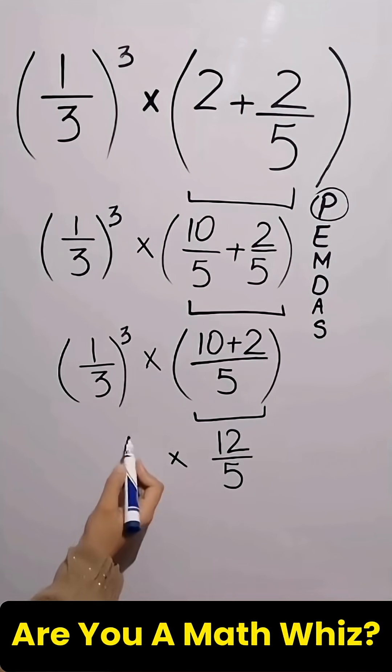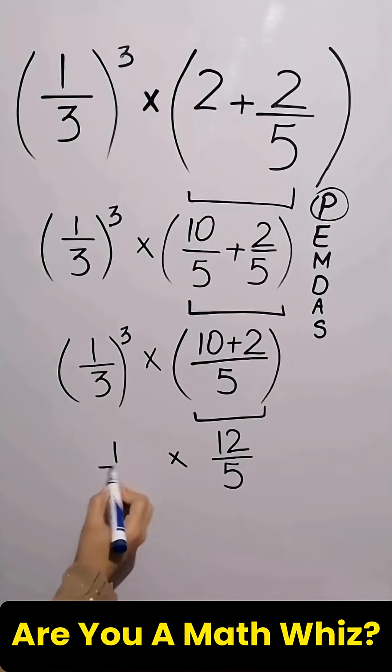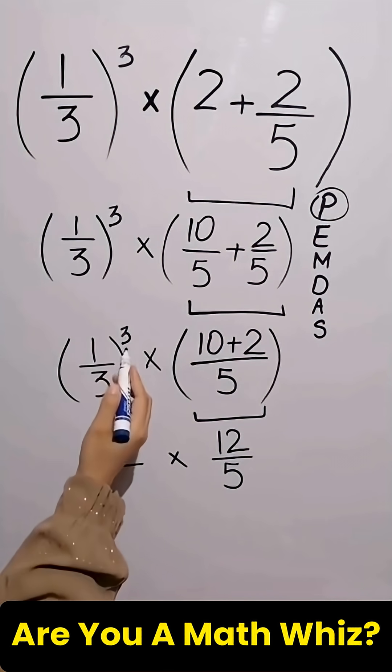First we simplify this exponent because exponent has higher priority than multiplication. 3 to the power of 3 equals to 27.